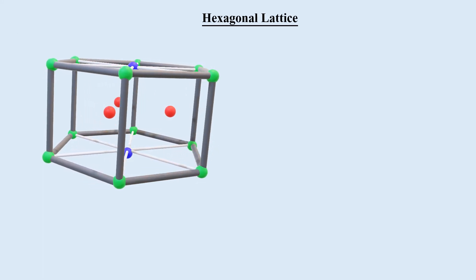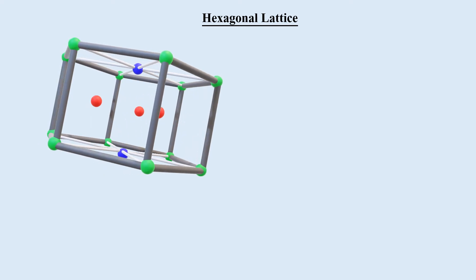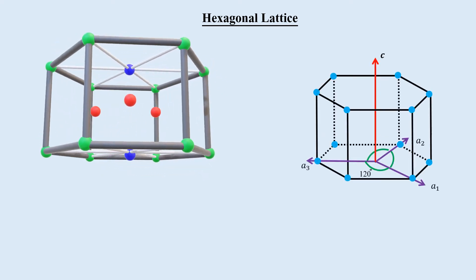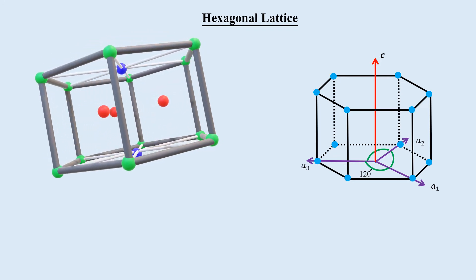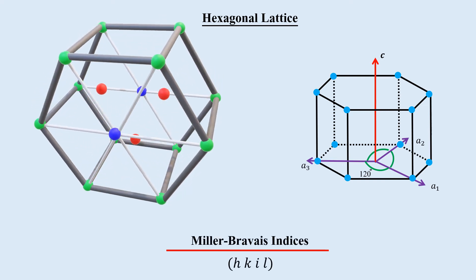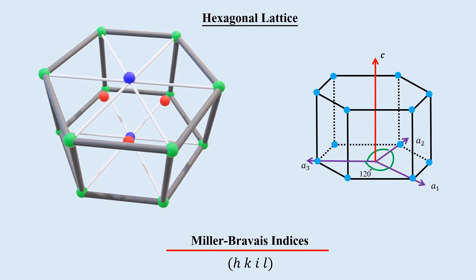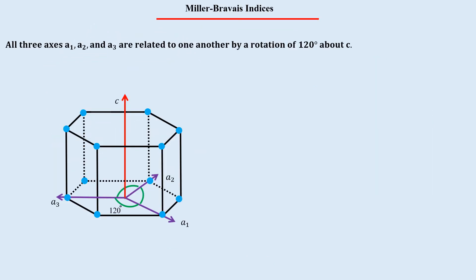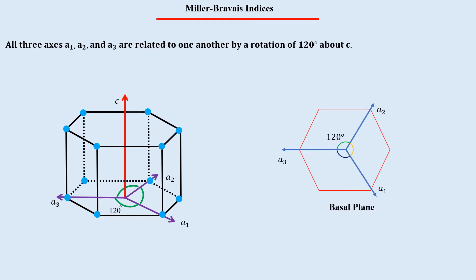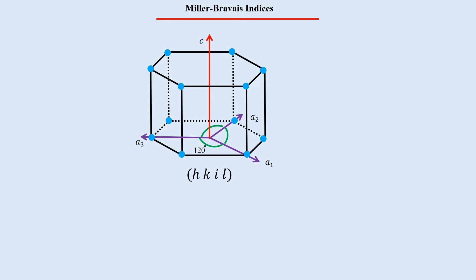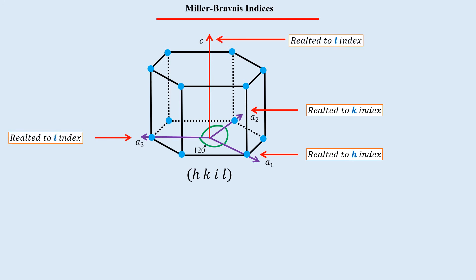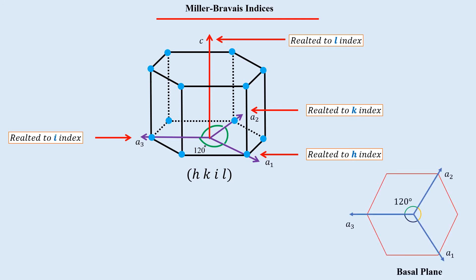Now let's discuss how planes of a hexagonal lattice are specified. Four crystallographic axes — A1, A2, A3, and C — are needed to define the hexagonal lattice. Therefore, four indices are required to specify its planes; these are called Miller-Bravais indices. A hexagonal lattice is made up of two hexagonal planes, and the basal plane geometry shows that axes A1, A2, and A3 are at 120° to each other about the C axis. In Miller-Bravais indices, H relates to A1, K to A2, I to A3, and L to C. There is a geometric relation: H + K + I = 0, or equivalently I = −(H + K).